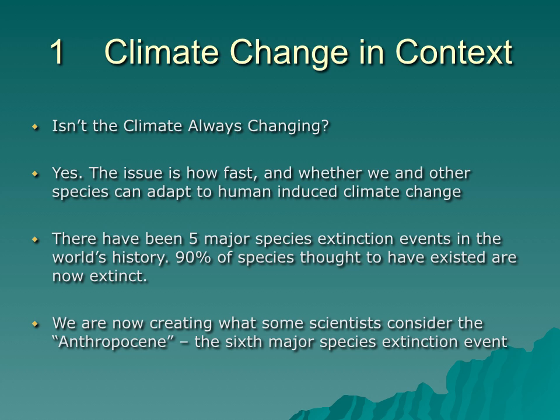These have been the results of meteor impacts and the like. However, some ecologists are now labelling the current age as the Anthropocene, a period of human-induced climate change which is likely to lead to the sixth major species extinction in the Earth's history. While dramatic, we will see why this is not necessarily an exaggeration.